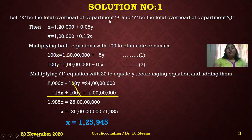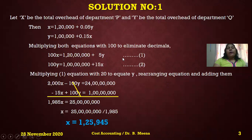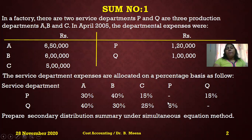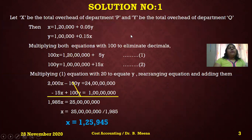Let x be the total overhead of department P and y be the total overhead of department Q. Now, framing the first equation: x is equal to P's overhead of 1 lakh 20 thousand plus 0.05y. I get 0.05y because under column P, the percentage from Q is 5%, so 5 divided by 100 gives 0.05y.